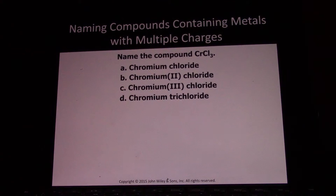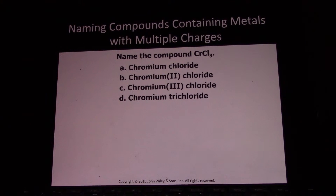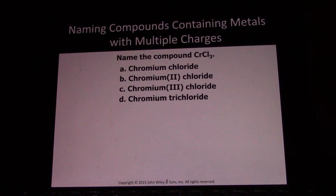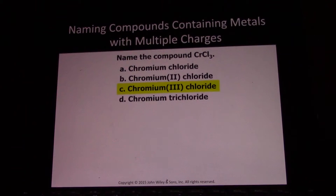Now name this compound. Chloride is in group seven — it's negative one. There are three of them, so a total negative charge of negative three. Therefore, I would need chromium three, because the chromium would have to be positive three to balance out the three negative one charges. This is chromium three chloride.